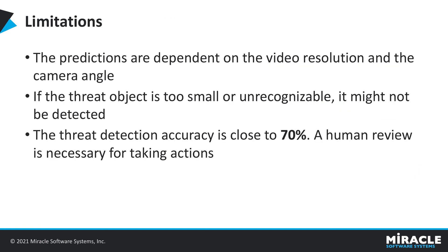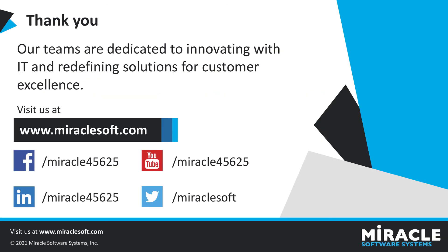Following are some of the limitations of this use case. The predictions are dependent on the video resolution and camera angle — the resolution must be of a certain quality and objects must be clearly visible. If the threat object is too small or unrecognizable in the video, it might not be detected. When the object is too small, the threat detection accuracy is close to 70%. More data is needed to increase accuracy, and human review is necessary to take appropriate action. Thank you everyone for your time.